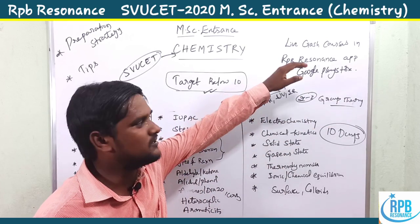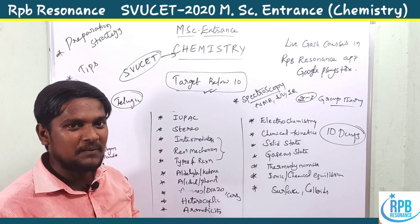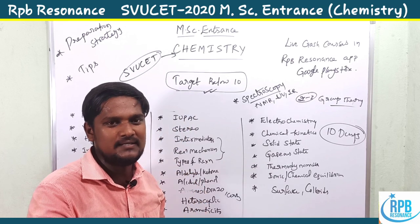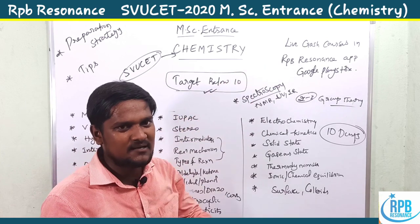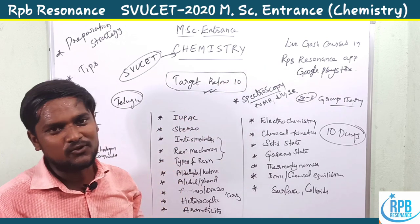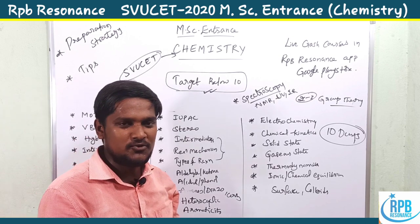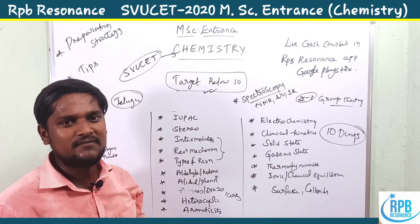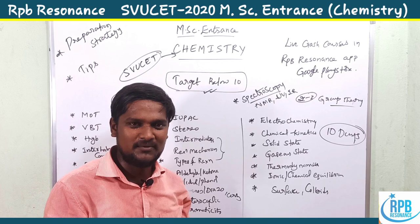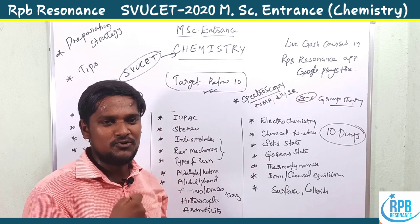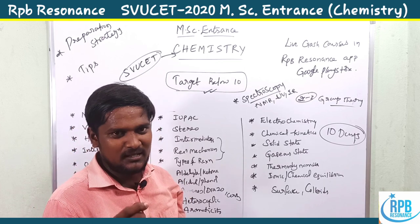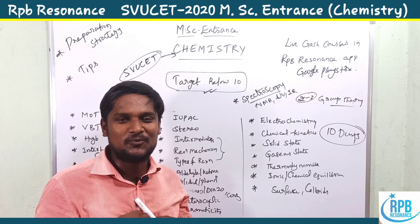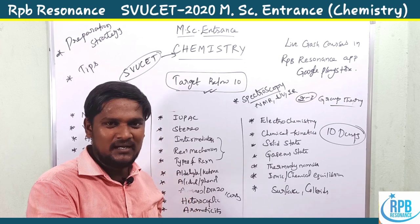RPP Resonance — you can find the application on the Google Play Store. The app download link is in the description box. Download the RPP Resonance app from the Google Play Store. If you are an MSc chemistry entrance student and you have a request or interest, you can join without any fee — no single rupee required.